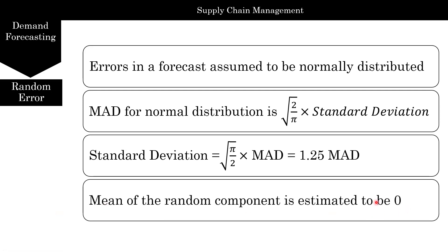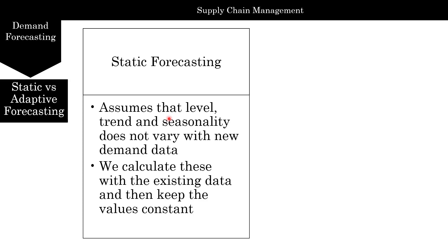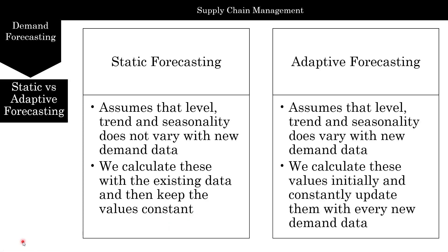The mean of the random component is estimated to be zero. Now let's talk about static versus adaptive forecasting — we'll have two more lectures, one on each. Static forecasting assumes that level, trend, and seasonality do not change when new data comes in, so we calculate these at the beginning and keep them constant. Adaptive forecasting assumes that level, trend, and seasonality vary with new data, so we constantly update these values with every new demand observation.